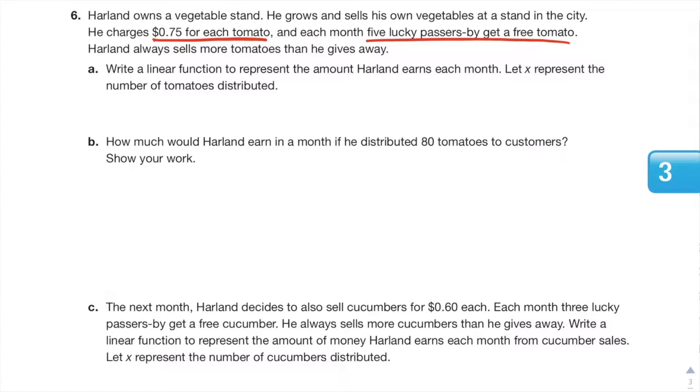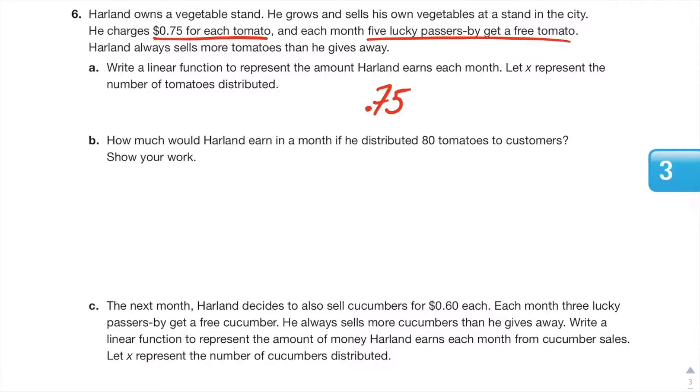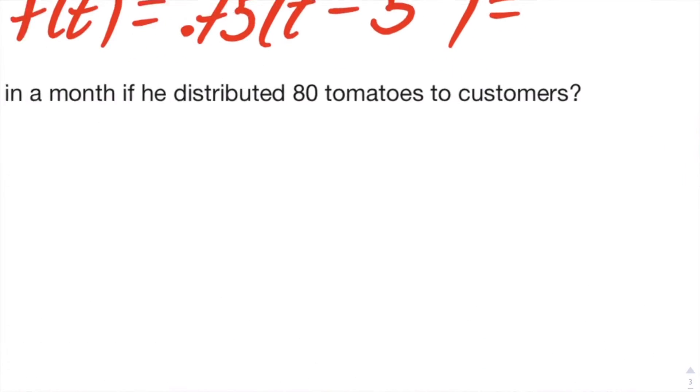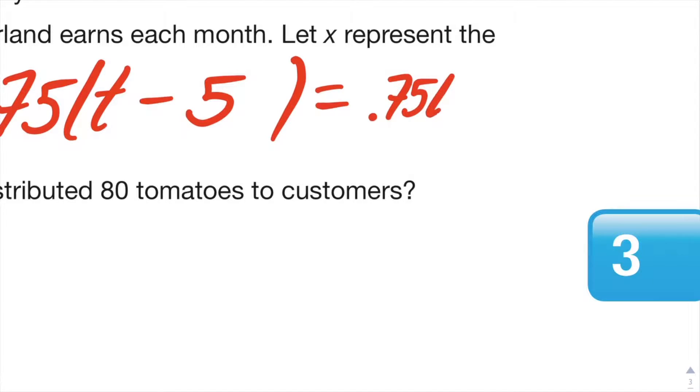Part A: Write a linear function to represent the amount Harland earns each month. Let x represent the number of tomatoes distributed. So for sure we know each one costs 75 cents. And from the work that you've done already, this is a distributive property. T represents tomatoes but he gives away five tomatoes, so we're gonna do minus because he gives it away, we're gonna do five. And we'll just do f(t) and let's simplify this. 0.75 times 5 is 3.75, I think. Yeah I think it is. There you go.